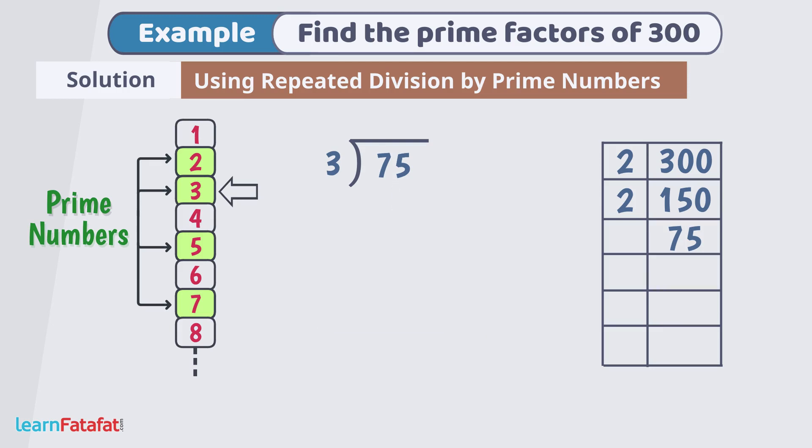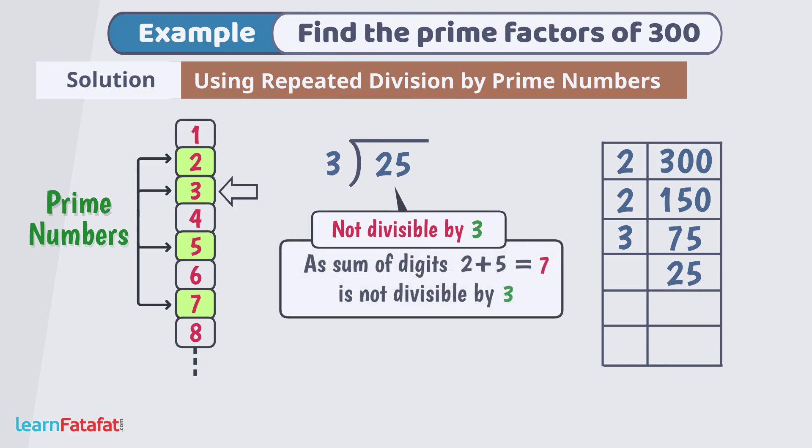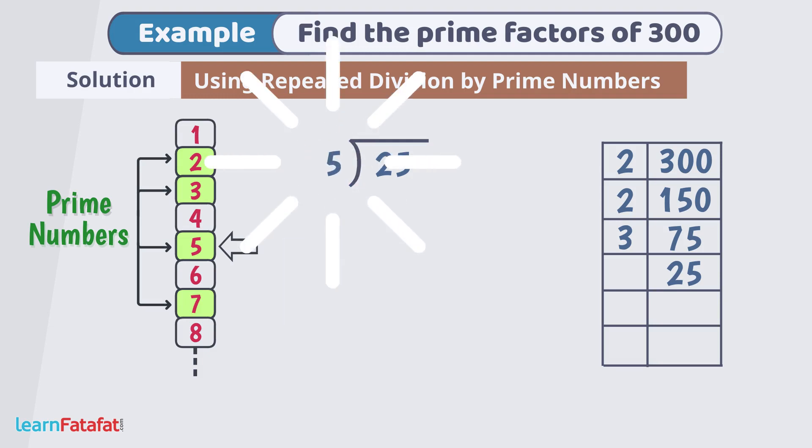On division, we get quotient 25. Write 3 here and 25 here. 25 is not divisible by 3 as sum of digit 2 plus 5 equals to 7 is not divisible by 3. Next prime number is 5.